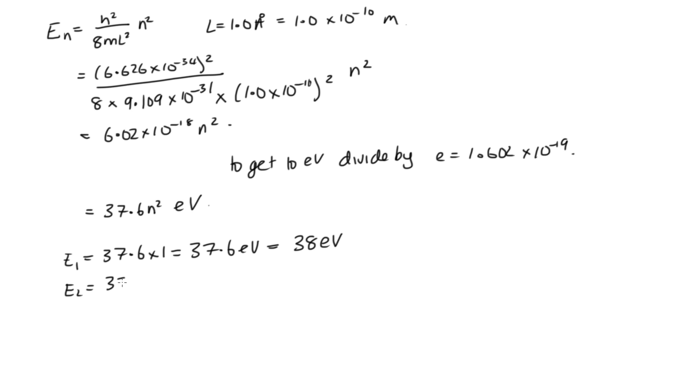E2 is equal to 37.6 times 2 squared, which is equal to 150.4 electron volts, which is 150 electron volts to two significant figures.